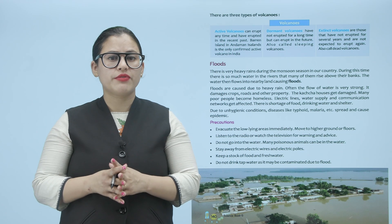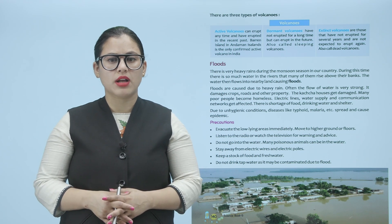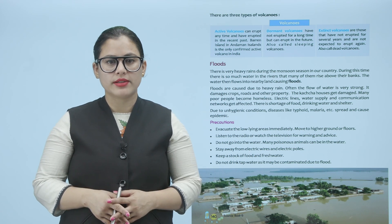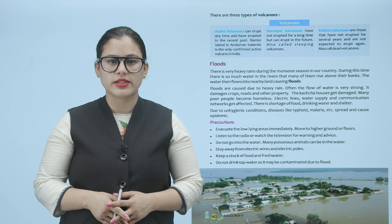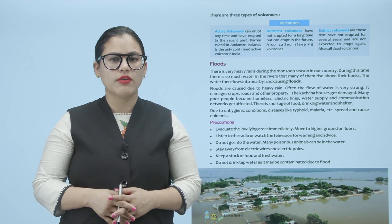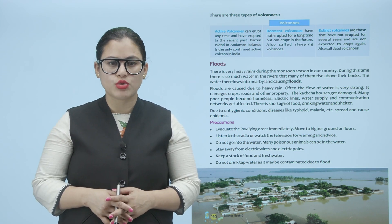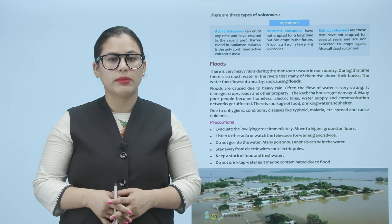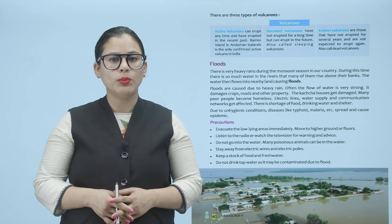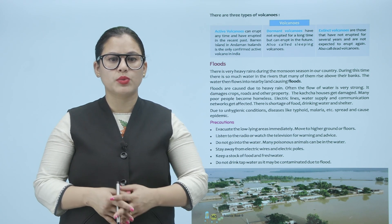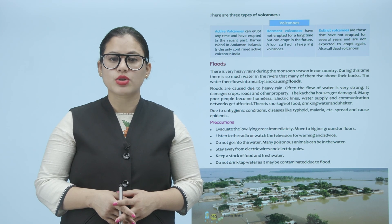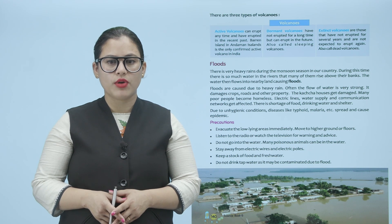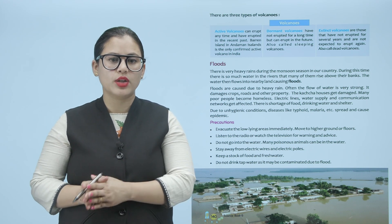Floods: there is very heavy rain during the monsoon season in our country. During this time, there is so much water in rivers that many of them rise above their banks, and the water then flows into nearby land causing floods. Floods are caused due to heavy rain, and the flow of water is often very strong. It damages crops, roads and other property. Kaccha houses get damaged, many poor people become homeless, and electric lines, water supply and communication networks get affected. There is shortage of food, drinking water and shelter. Due to unhygienic conditions, diseases like typhoid and malaria spread and cause epidemics.